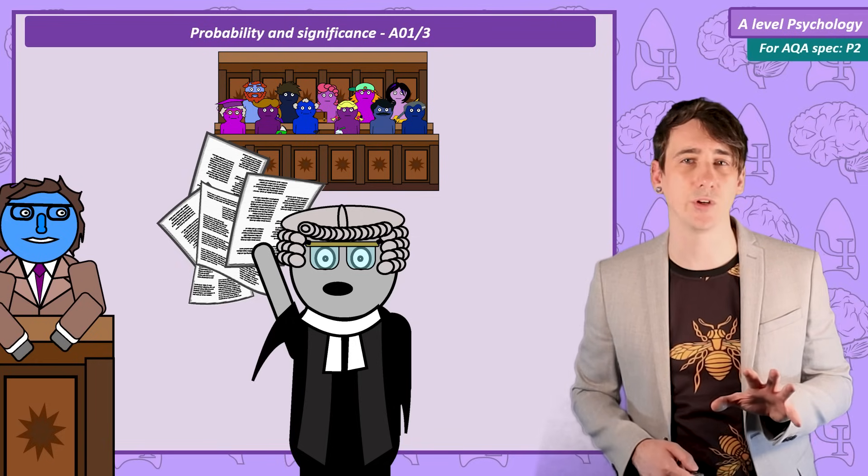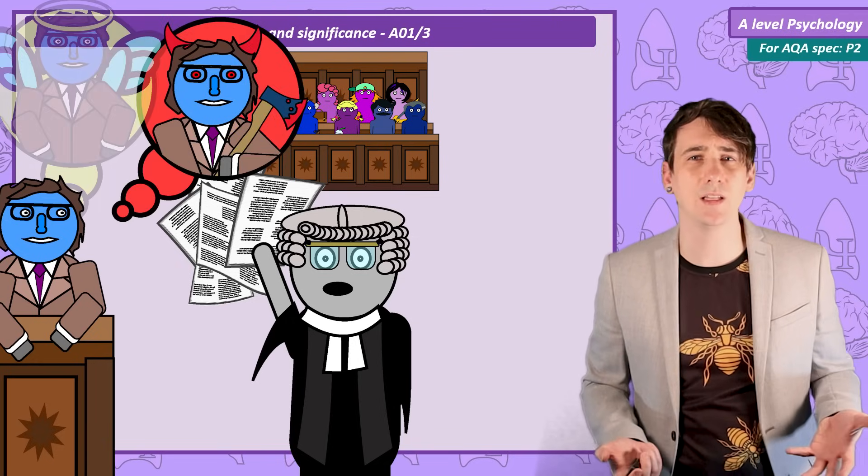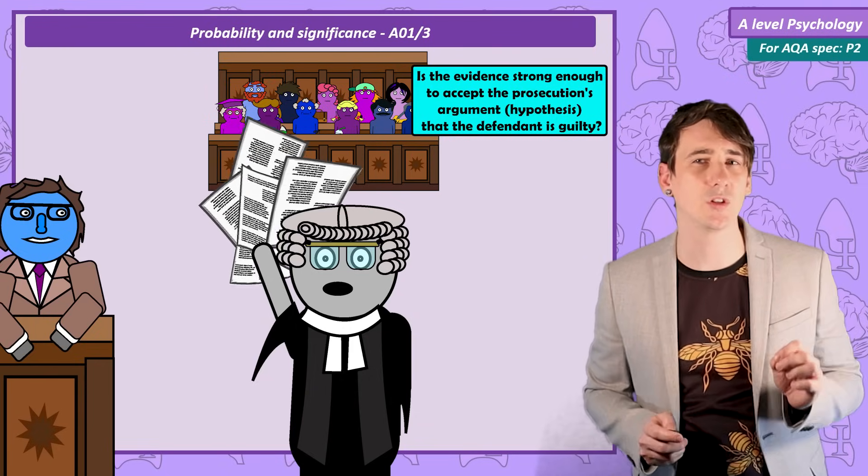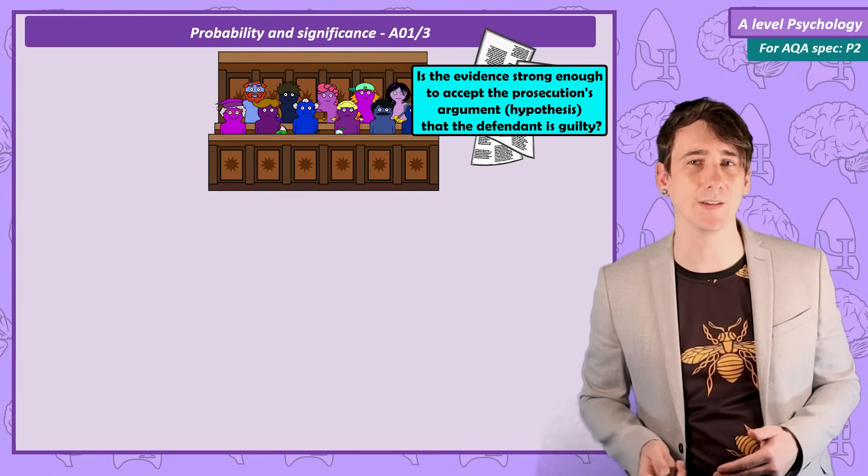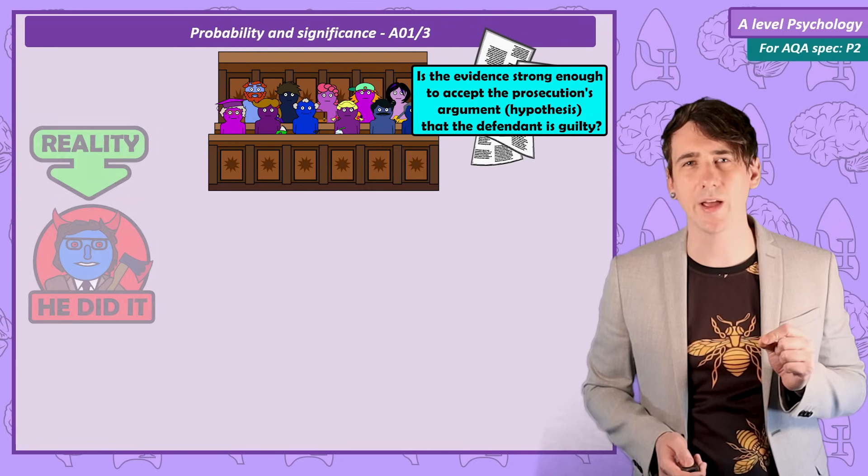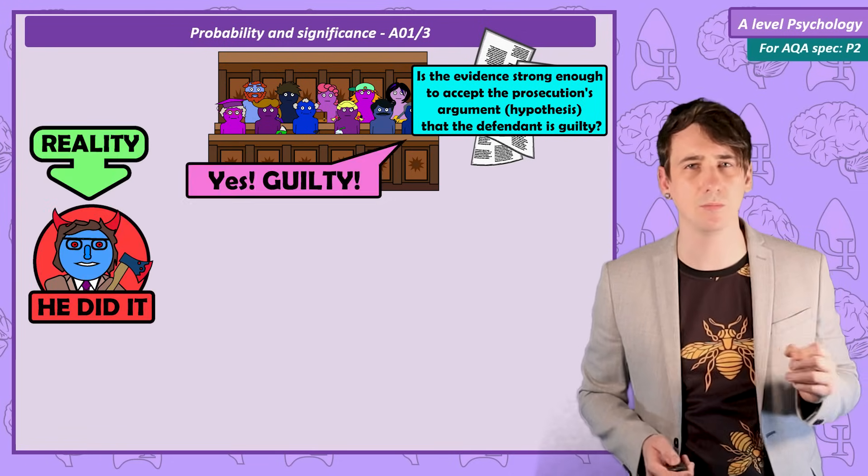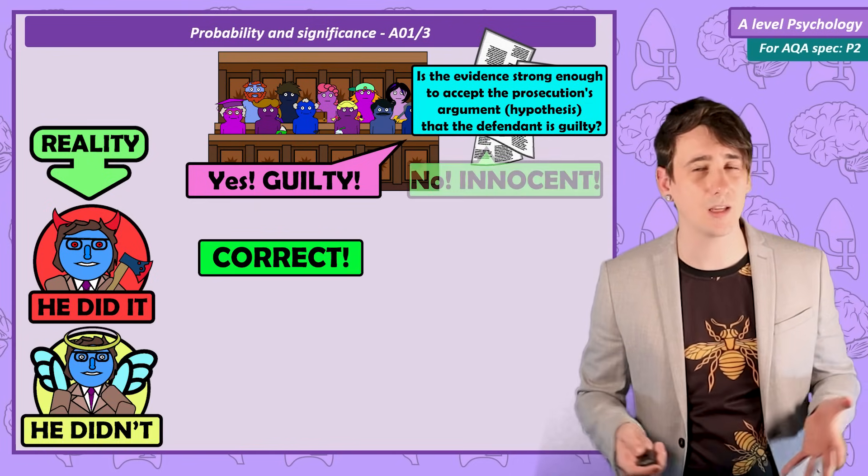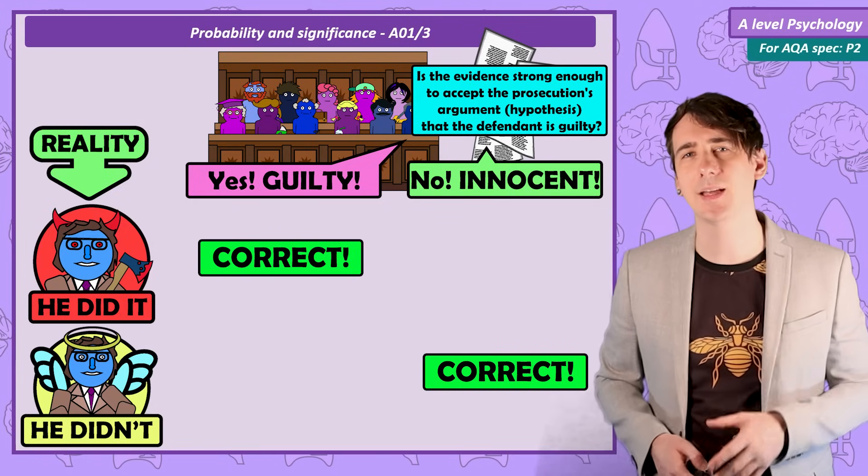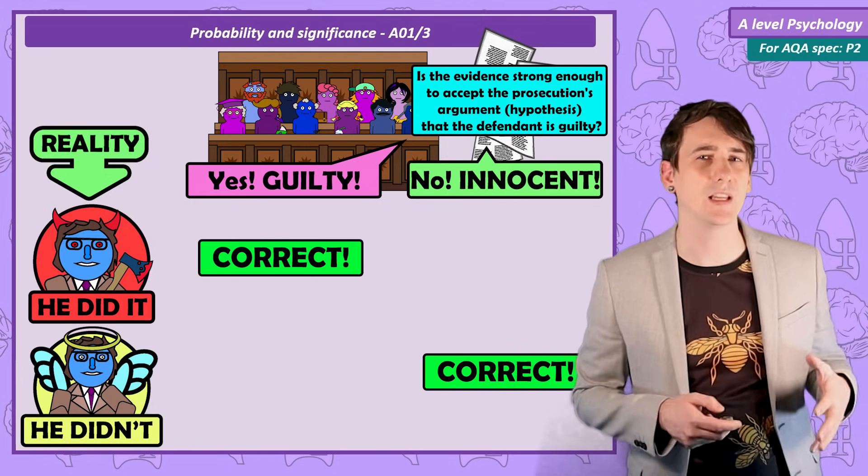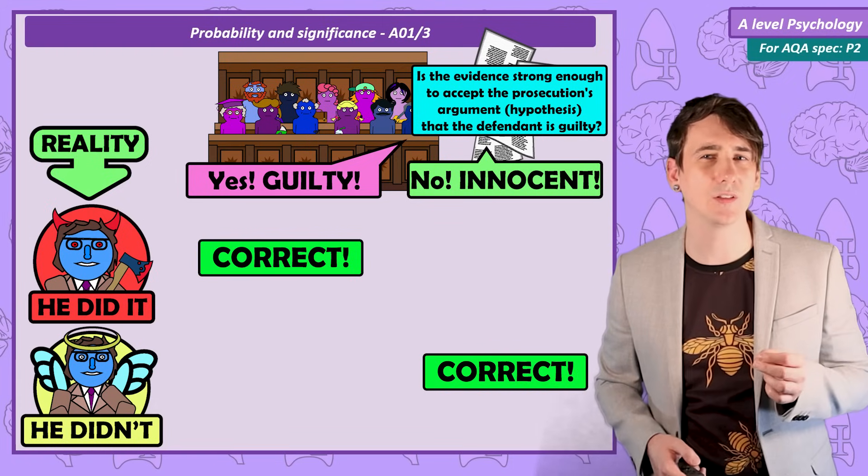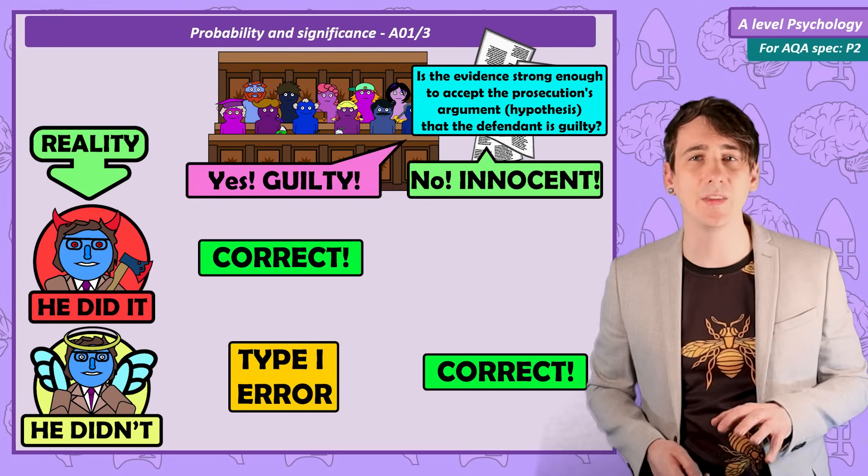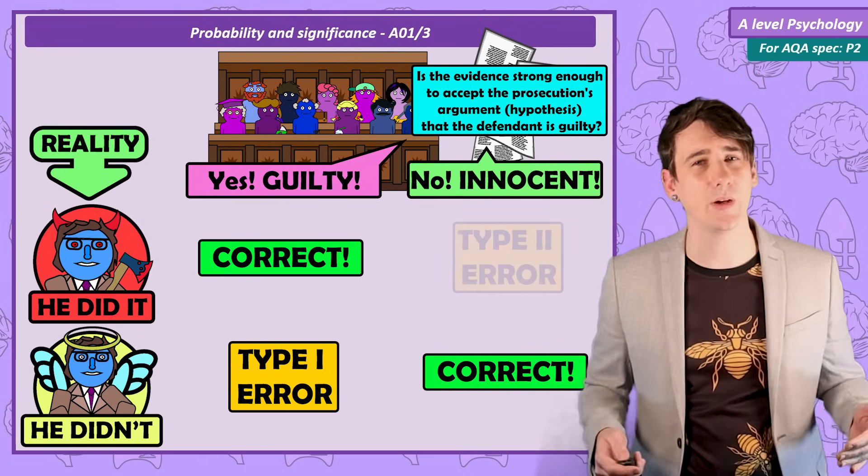Now there is of course an objective truth. The defendant either did the crime or they didn't. But the jury can't know that objective truth. All they can do is listen to the evidence the prosecution provides and make a decision. Guilty or not guilty. If the defendant actually did the crime and they accept the prosecution's argument and say guilty, well that's correct. If the defendant actually didn't do the crime and the jury say innocent, that's correct. But the jury can accept the prosecution's argument when the defendant is actually innocent. When they incorrectly accept this evidence and say guilty they're making a type 1 error. If on the other hand they don't think the prosecution's evidence is strong enough and they say innocent when the defendant is actually guilty, they've made a type 2 error.